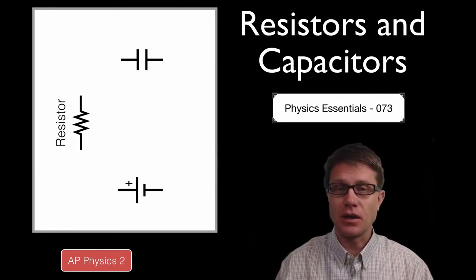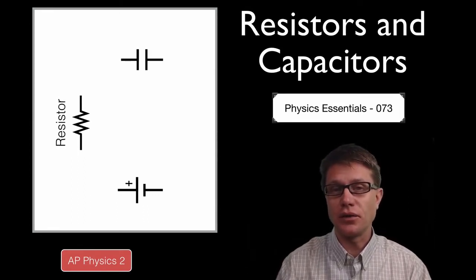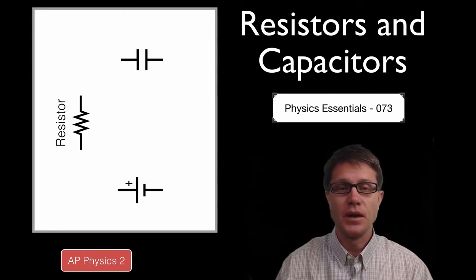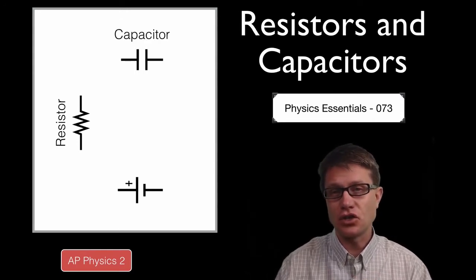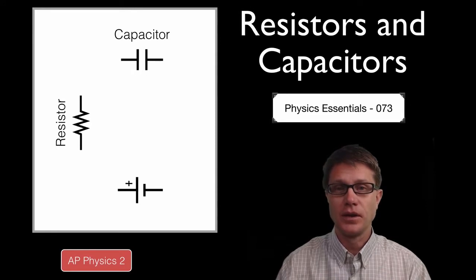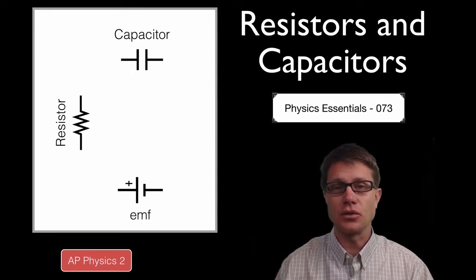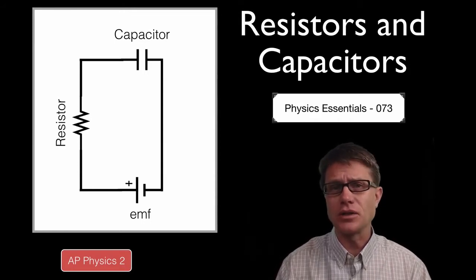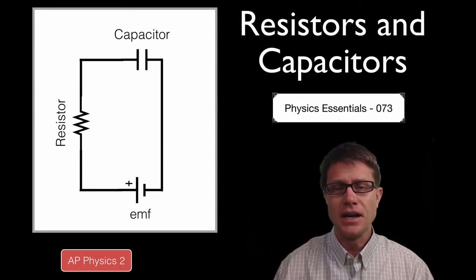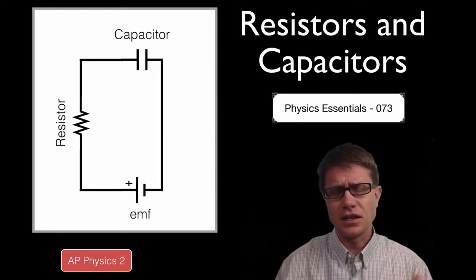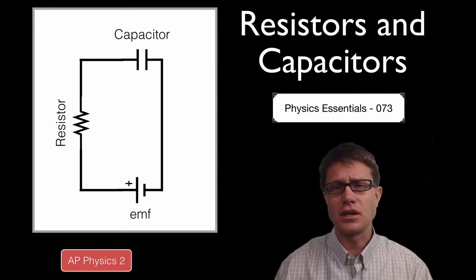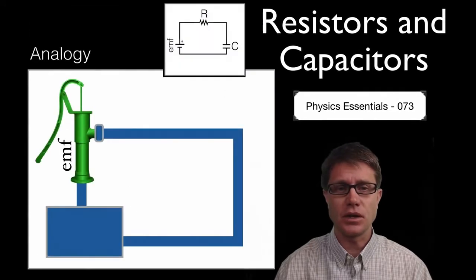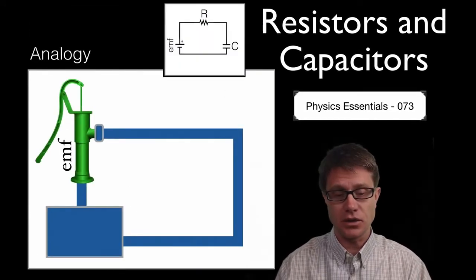A resistor is drawn like this in a circuit diagram, and what it does is it restricts the flow of current in the circuit. A capacitor is drawn like this, and what it does is it stores charge in a circuit. It is not going to be a circuit unless we have some kind of energy source, so we have an EMF or a DC power source. If we connect them, you should know not only what the resistor and capacitors do, but what makes a good resistor and what makes a good capacitor. To understand that you really have to understand at the gut level how a circuit works, and analogies work best for this — we are going to use an analogy of water flow.